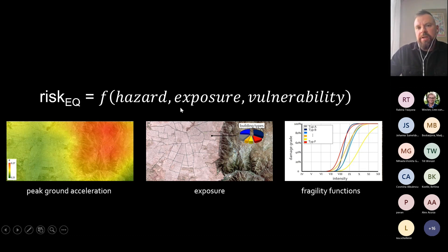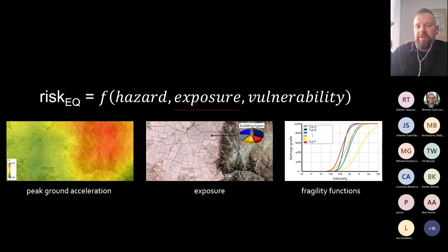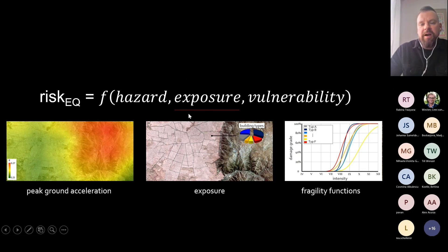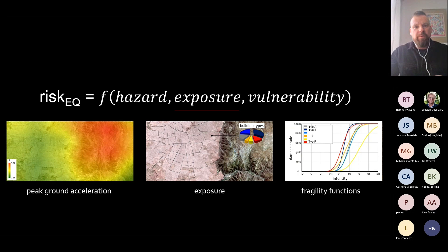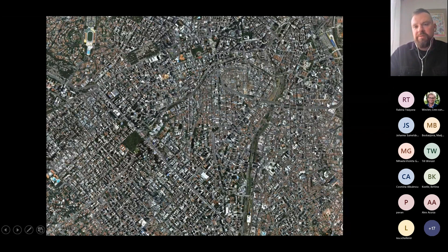Compiling exposure data is still one of the costliest components in risk models. And when you think about the dynamics of many urban systems nowadays — just recalling how fast cities like Istanbul grew and changed over the last four decades — it's really a big challenge to keep track and always have a proper exposure model in place. So that is one of the main focuses of my talk today: how Earth observation techniques and other datasets can support the compilation of exposure data for risk models.